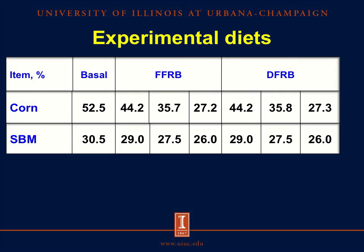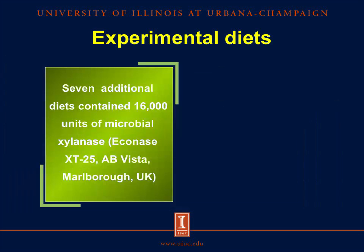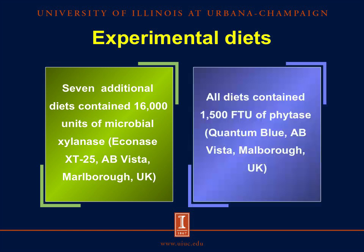Here we have the experimental diets. All diets contained corn and soybean meal. The rice coproducts were added at the expense of corn at 10, 20, and 30 percent inclusion levels. All diets also contained 10 percent whey powder and 3 percent choice white grease. Calcium phosphate was added to the basal diet, but no additional source of phosphorus was added to the diets containing full fat or defatted rice bran. Seven additional diets were also formulated containing 16,000 units of microbial silenus. All diets contained 1,500 units of phytase.